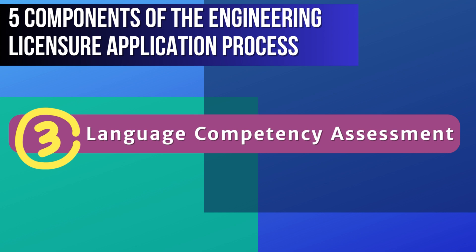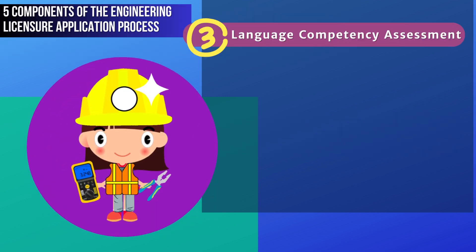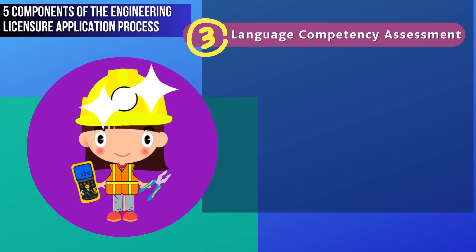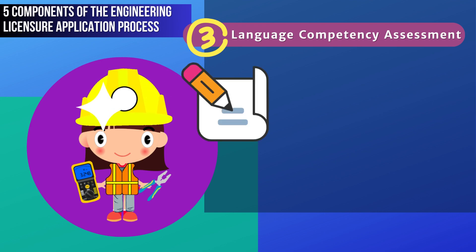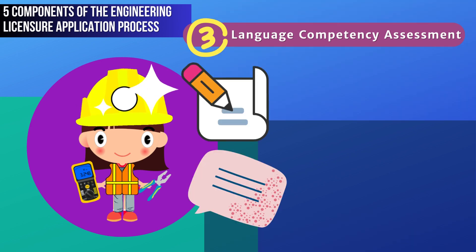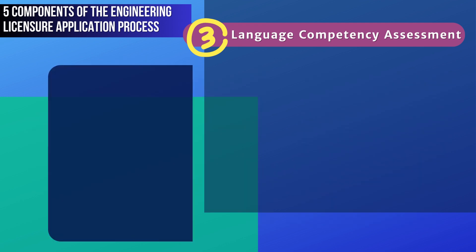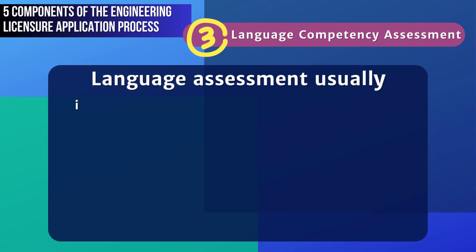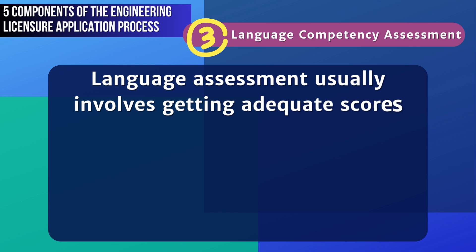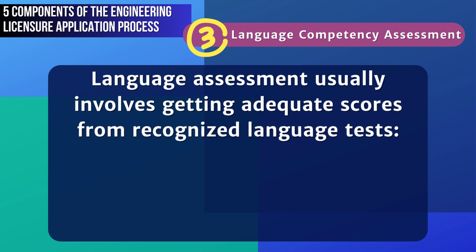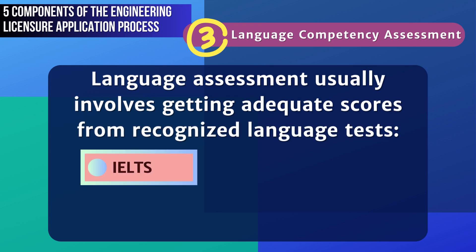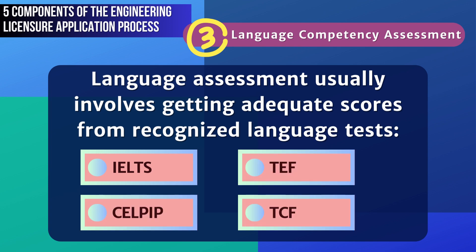Three, language competency assessment. Another crucial part of the engineering licensure application process is the language competency assessment. You need to prove that you have the ability to communicate effectively, whether written or spoken, in either English or French, depending on the Canadian province or territory where you want to practice. The assessment usually involves getting adequate scores from recognized language tests, like IELTS or CELPIP for English, and TEF or TCF for French.